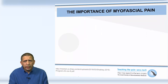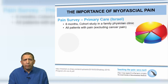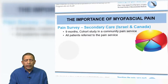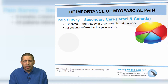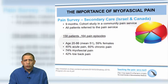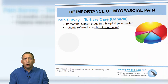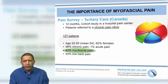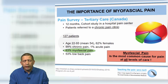Can we be more specific? In a pain survey in primary care in Israel — a six-month cohort in a family physician clinic with almost 130 patients, mostly acute pain at 80% — 92% had myofascial pain. In a secondary care survey in Israel and Canada — nine months, 160 patients, 40% acute and 60% chronic — 74% had myofascial pain. In a 12-month tertiary care study in a hospital pain center with 130 patients, mostly chronic, 63% had myofascial pain. Myofascial pain is the most common cause of pain at all levels of care.